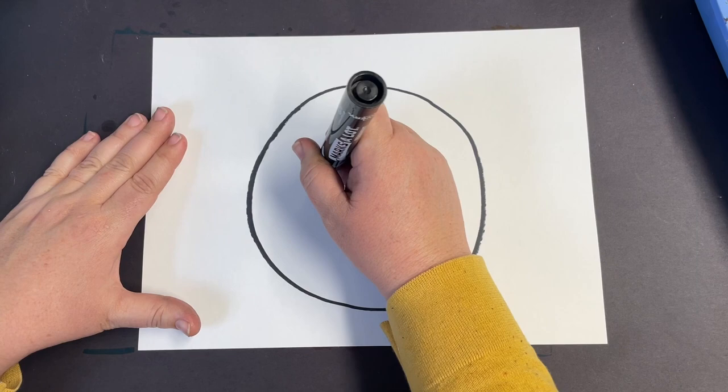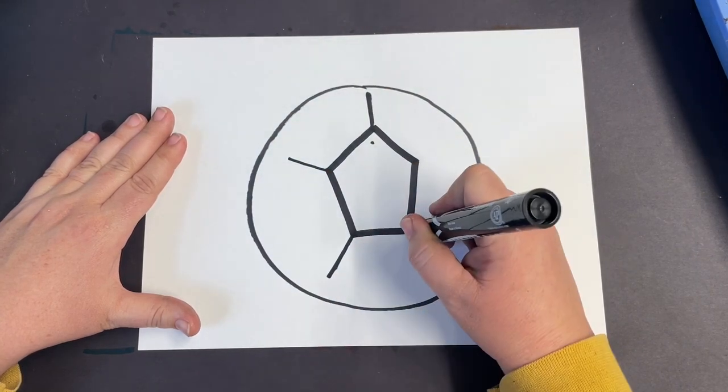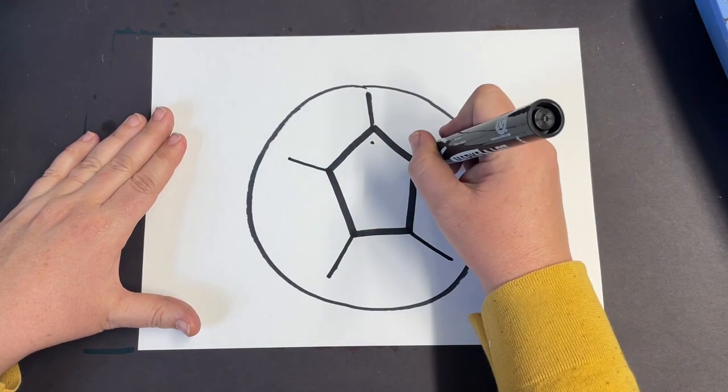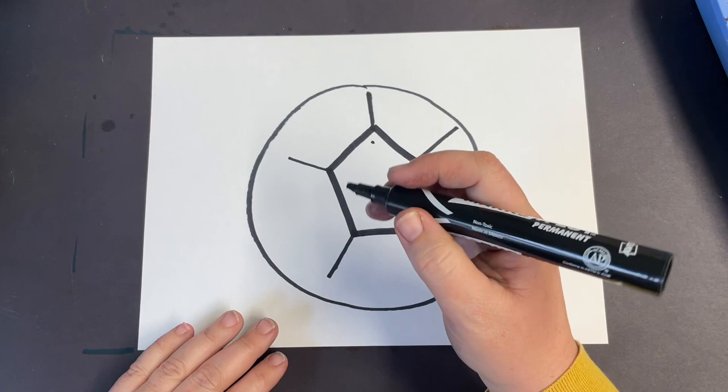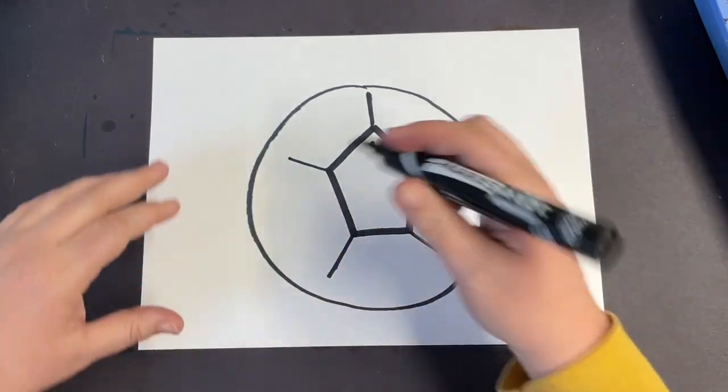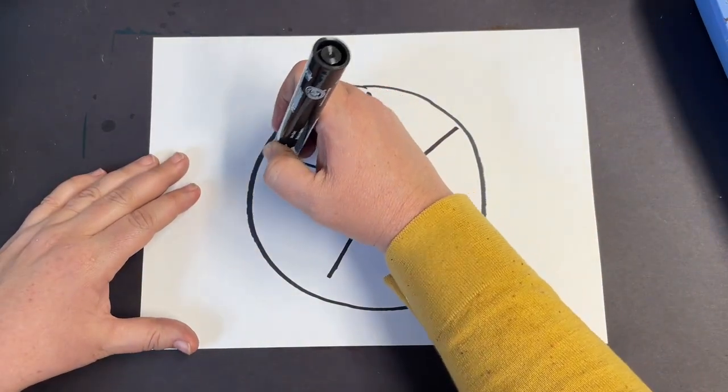Now I'm going to take a line going out from all of those vertices. At the end of those lines, I'm basically going to turn them into little letter Ys until it meets the edge of my soccer ball.